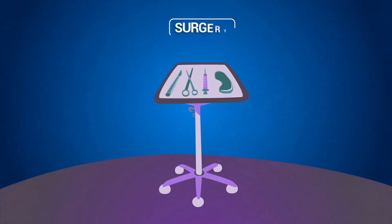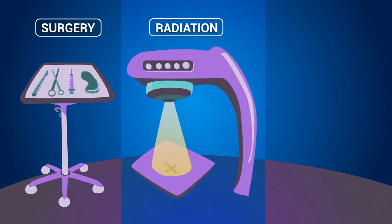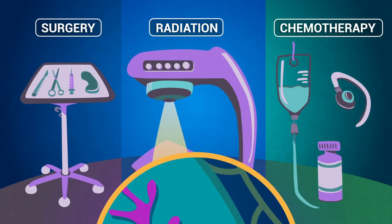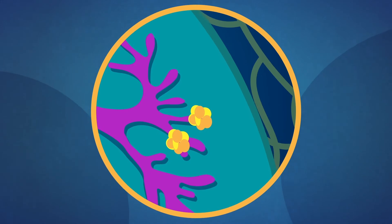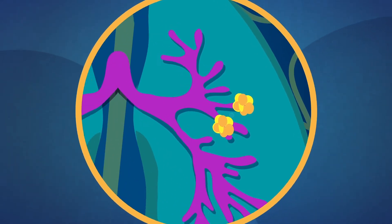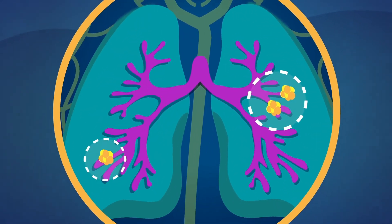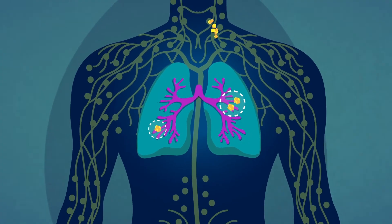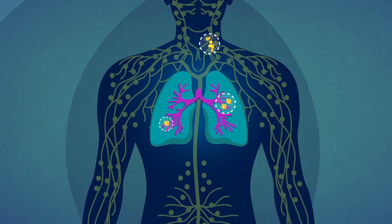The three types of treatments we use for cancer are surgery, radiation, and chemotherapy. Which treatment is used depends on the type of cancer you have, how far it has spread, and what we're capable of doing in terms of surgical intervention in relation to size.